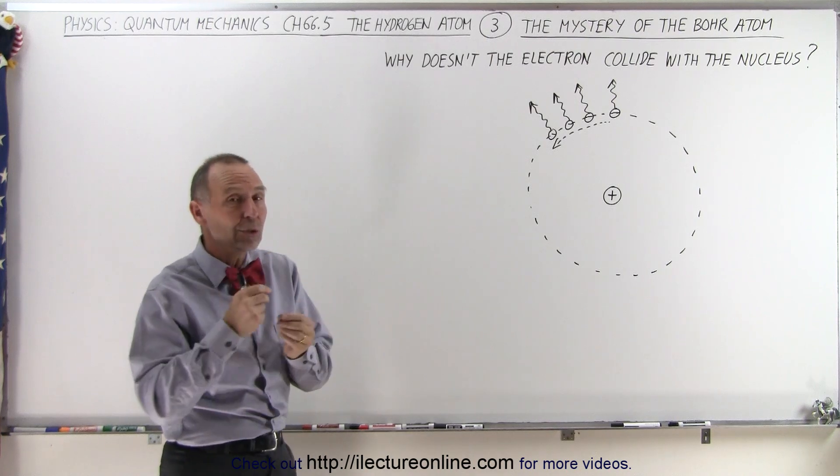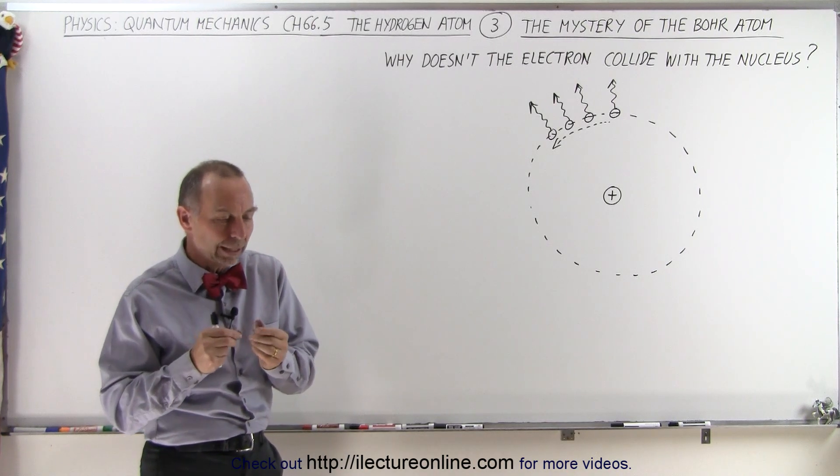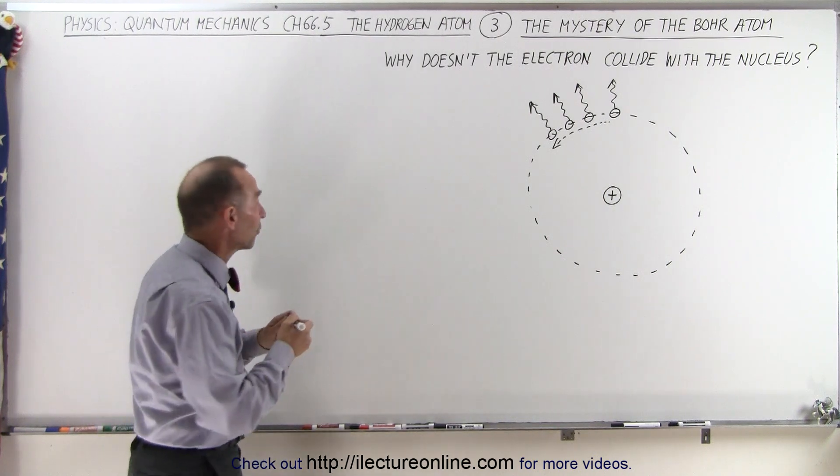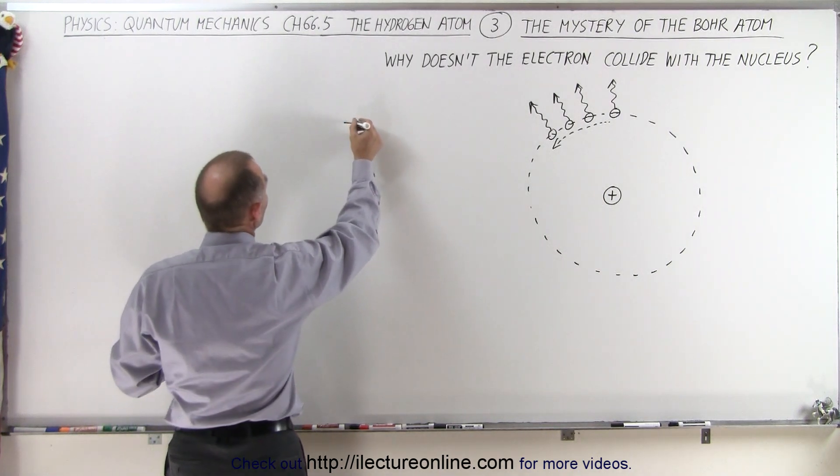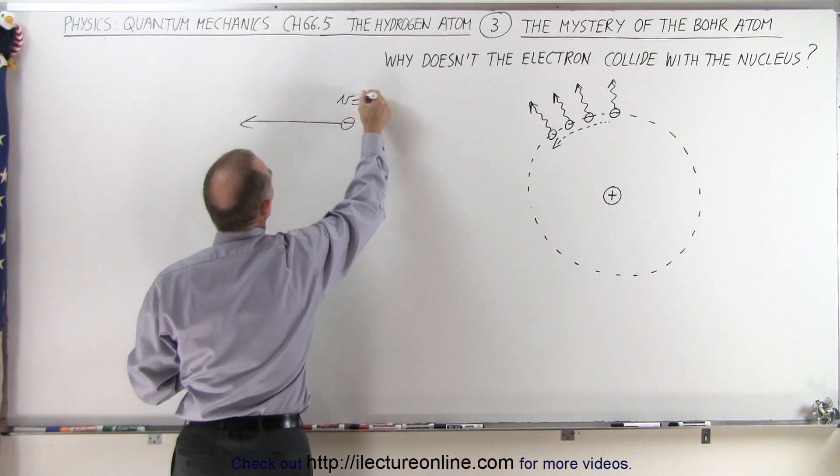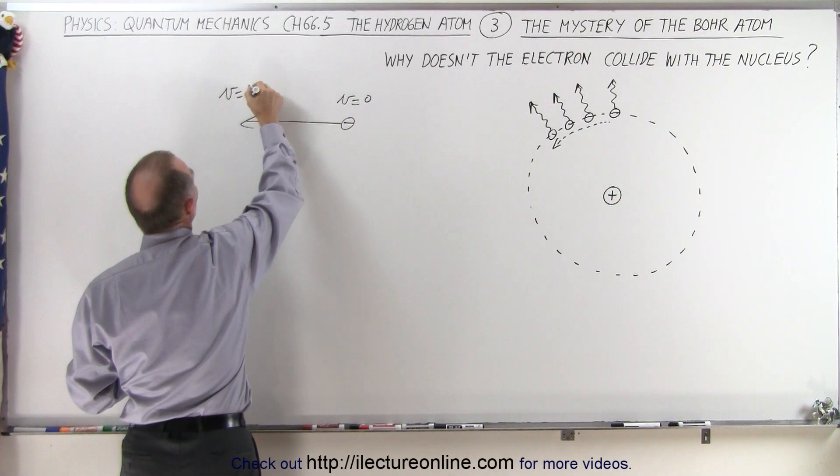Because at the time we knew that any charged particle that accelerates, and acceleration can come in various forms. For example, if you have a small particle, let's say an electron, and it accelerates from v equals zero to v equals some high velocity, so if there was some very large acceleration on the electron...